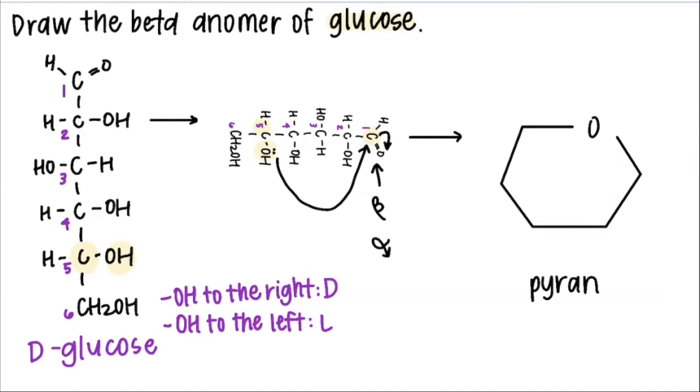Next you want to number the carbons in the ring which follow this template. Here you can see that the oxygen that did the attack is still connected to carbons one and carbon five, much like it is in the fissure projection.